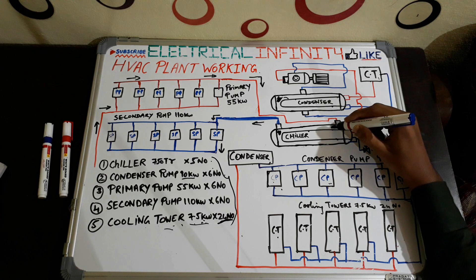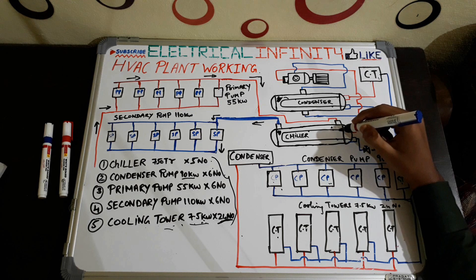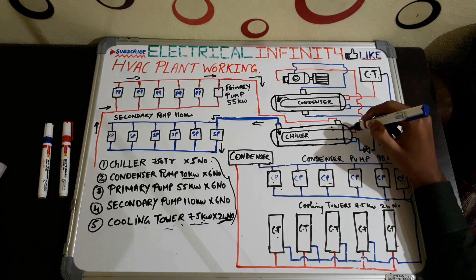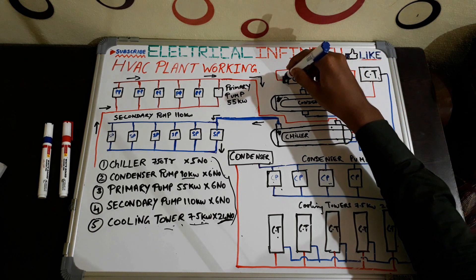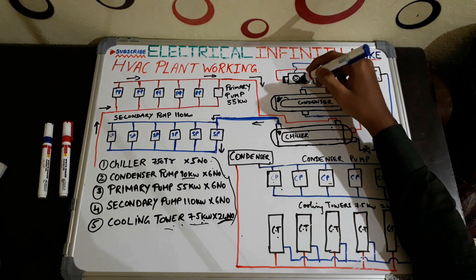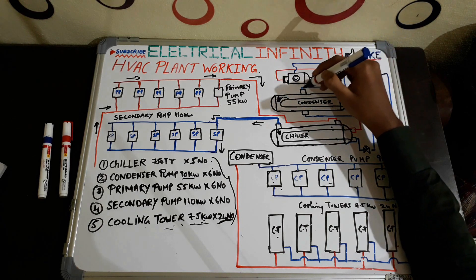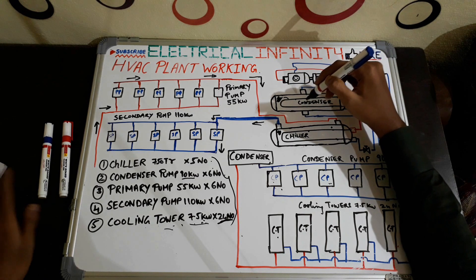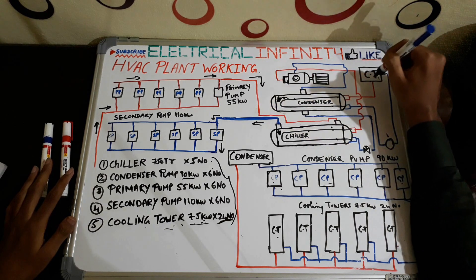The water in the chiller shell side gets cooled down due to heat transfer between the water in the shell side and the refrigerant in the tube side. The refrigerant, after a rise in temperature due to heat transfer, is sent back to the compressor. The compressor again compresses the high-temperature refrigerant and sends it to the condenser for cooling, where heat exchange takes place between the refrigerant and the cool water from the cooling tower.